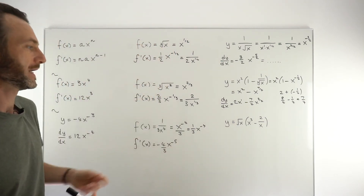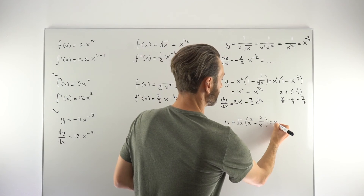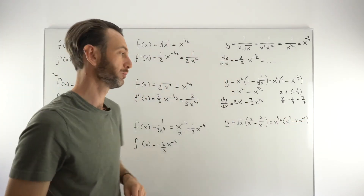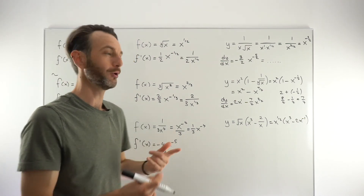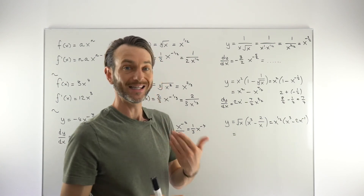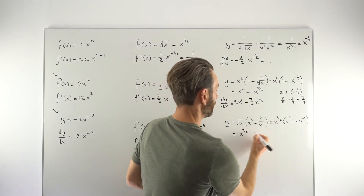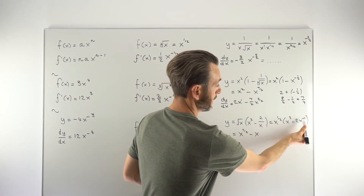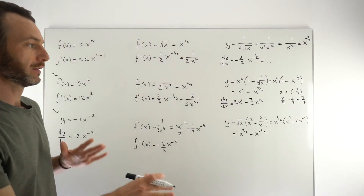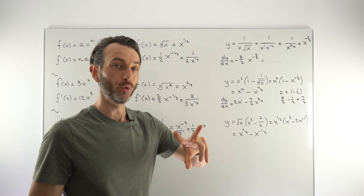The final example is a combination of things we've already seen. I'm going to change the square root to X to the one-half, leave the X cubed term, and take the X on the fraction up to the top to make it 2X to the minus one — two exponent rules at once. It's still not differentiable because of the bracket, so multiply out: X to the one-half times X to the three gives a power of one-half plus three, which is seven over two.